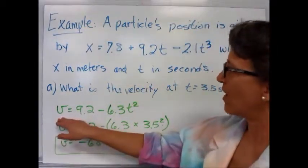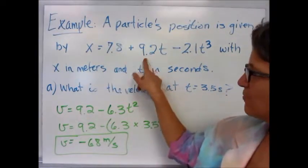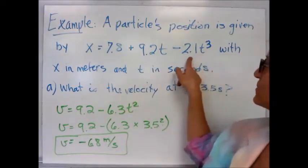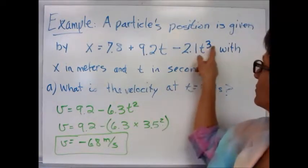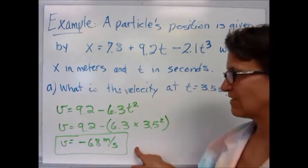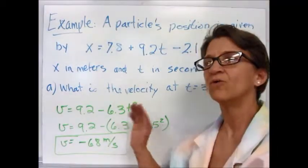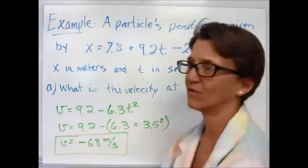Taking the first derivative, 7.8 drops out. This becomes 9.2. 3 times 2.1 gives us 6.3t². Remember, you subtract one from your exponent. Plugging in our time, we get negative 6.8 meters per second, which just shows the direction, which usually means to the west or to the left.